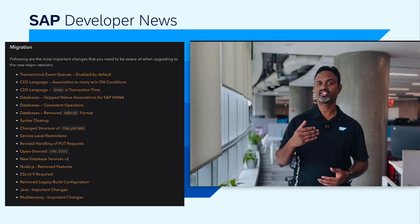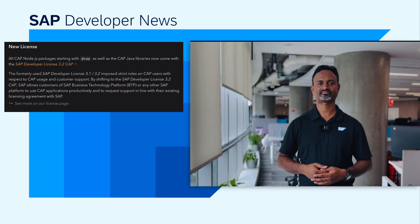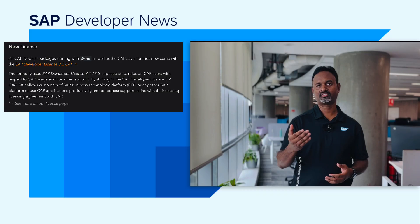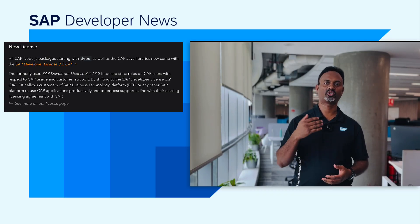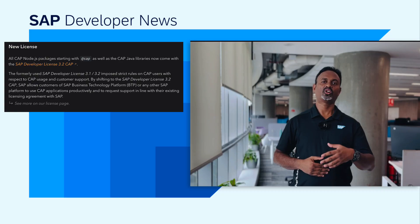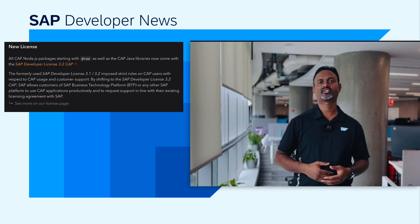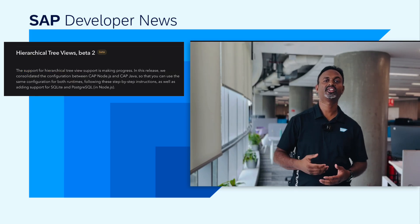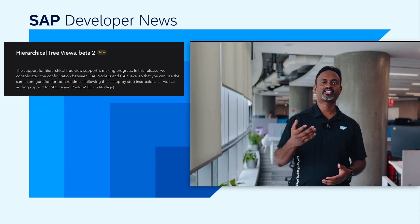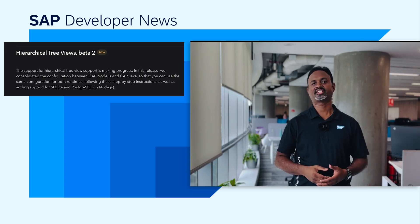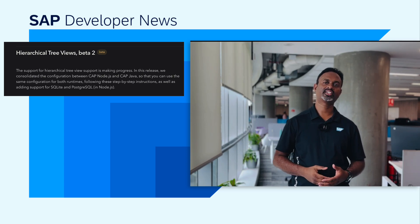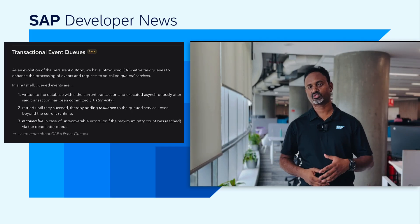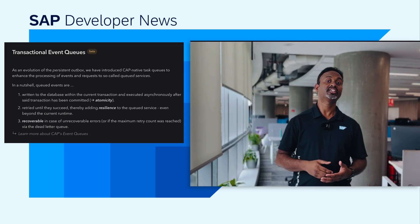Be sure to check all the details while migrating to the new version. All the CAP Node.js packages and Java libraries now come with a new SAP Developer License 3.2 CAP that allows customers of SAP BTP or any SAP platform to use CAP applications productively and request support. We also have common configuration or hierarchical tree views, available in beta 2 release for CAP Node.js and Java, with added support for SQLite and Postgres.